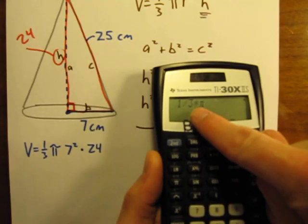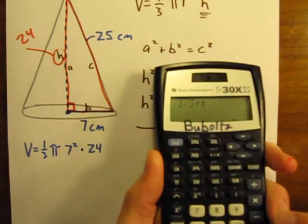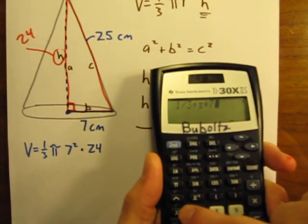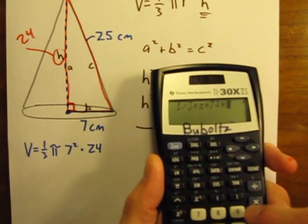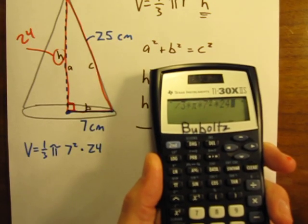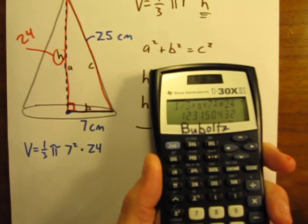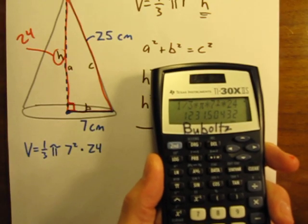So it's 1 divided by 3 times pi times 7 squared times 24 equals, and here I get